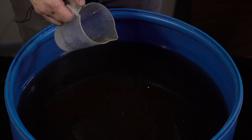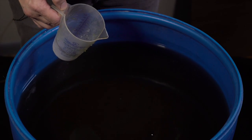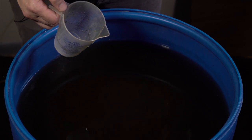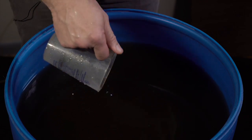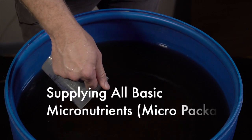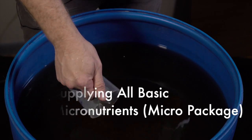And then magnesium, sulfur, boron, copper, iron, manganese, and zinc. So it's giving you all your base micro package that you're going to need for your plants.